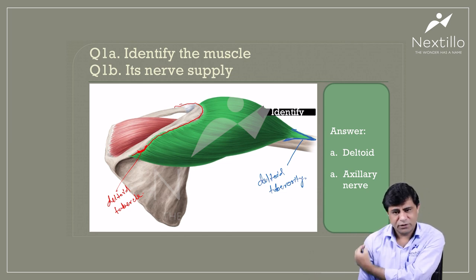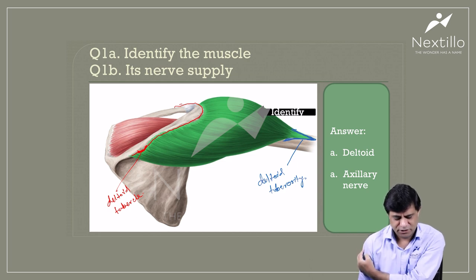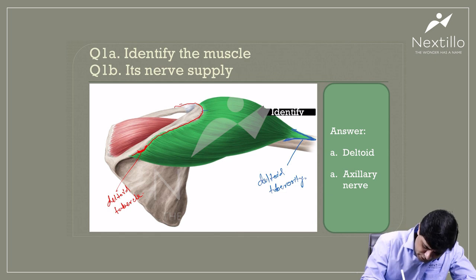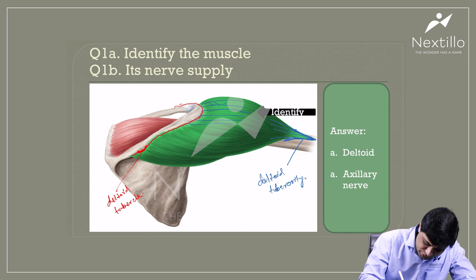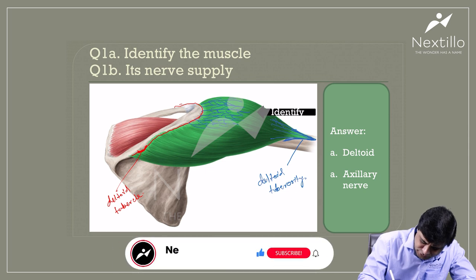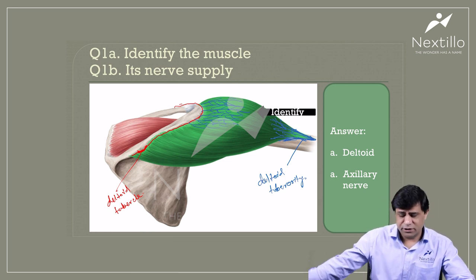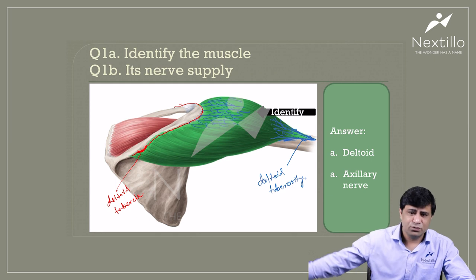The acromial fibers — the lateral fibers — those fibers are multipinnate. They have fibrous internal muscular intersections at both the origin and insertion ends, which provide origin to multiple fibers making this muscle multipinnate. Remember, the entire muscle is not multipinnate — it is the acromial or lateral fibers that are multipinnate. These take abduction from 15 to 90 degrees.